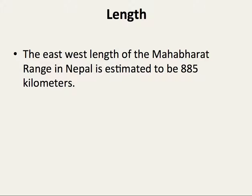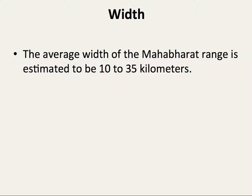Length: The east to west length of the Mahabharath Range in Nepal is estimated to be around 885 km. Width: The average width of the Mahabharath Range is estimated to be around 10 to 35 km.